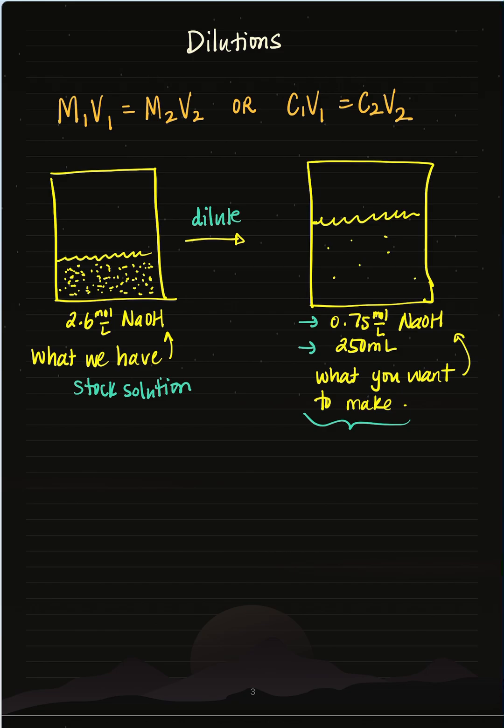I'm going to use my dilution formula. So M1 is the molarity or concentration of my stock solution. That's 2.6. V1 is what I want to actually solve. I want to know how much of this do I need to do my dilution.